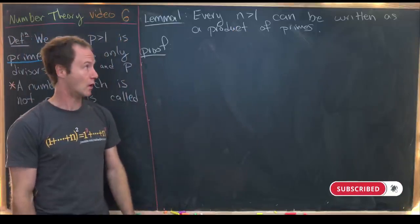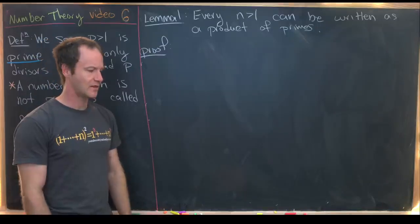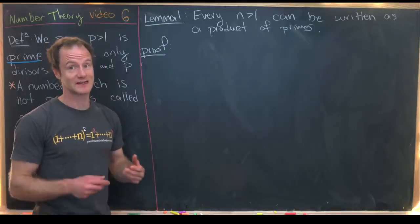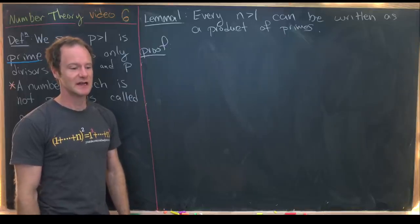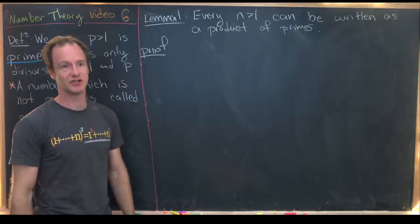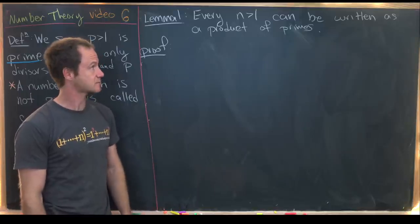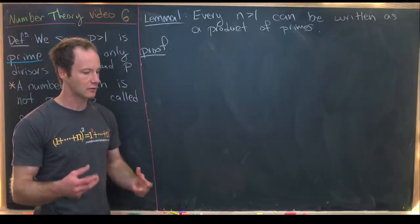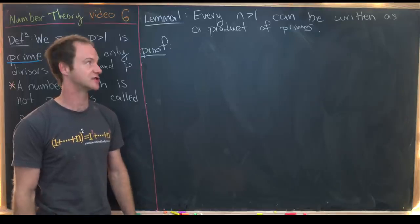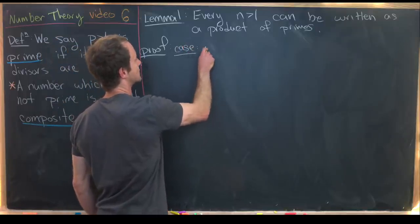Lemma 1: every natural number bigger than 1 can be written as a product of primes. You might worry about the number 1 — it doesn't seem to be composite or prime, and you would be correct: it is neither. It is in fact a unit. In other algebraic structures there are many more units than just 1, or 1 and -1 if you're considering the integers. So 1 plays a unique role as the only unit in the natural numbers.